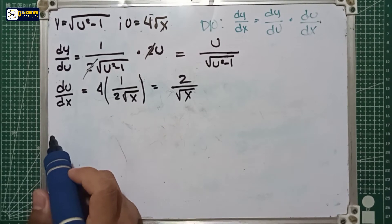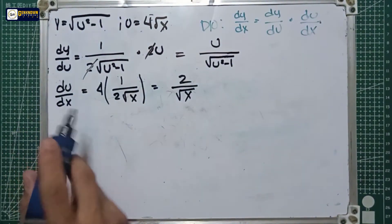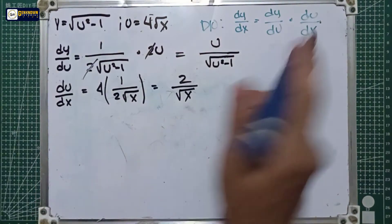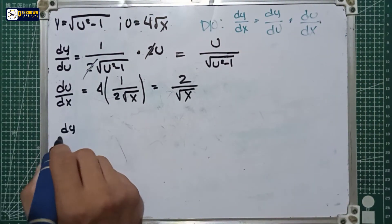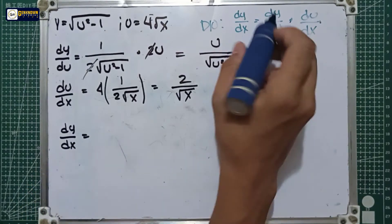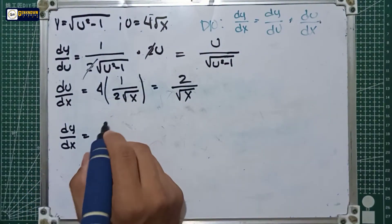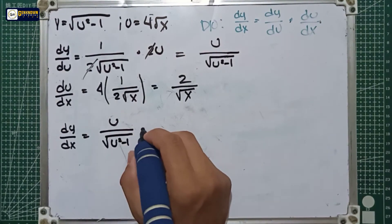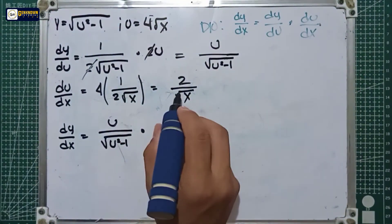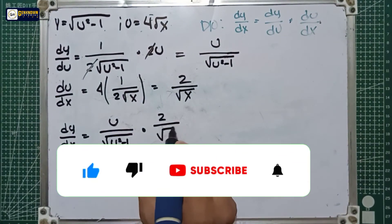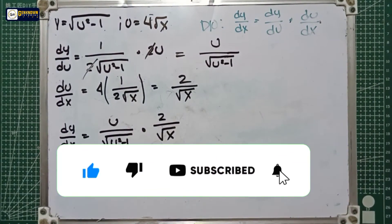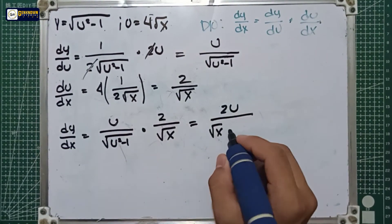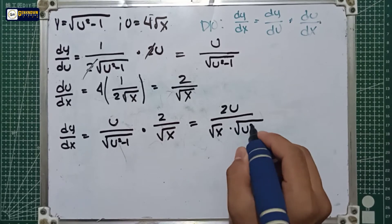Since we have the complete requirements for the chain rule — dy over du and du over dx — we can now combine them through multiplication. So dy over dx is equal to dy over du, which is u all over the square root of u squared minus 1, multiplied by du over dx, which is 2 all over the square root of x. That gives us 2u all over the square root of x multiplied by the square root of u squared minus 1.